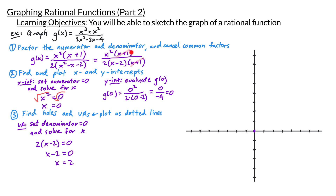Since the factor x plus 1 was canceled, we're going to have a hole. There's an x value that makes the denominator equal to 0 but is not a vertical asymptote — specifically x equals negative 1 makes that factor equal to 0, so negative 1 is not part of our domain but it's not a vertical asymptote either. So our hole is at x equals negative 1. Now let's plot our vertical asymptote at x equals 2 as a dotted line.